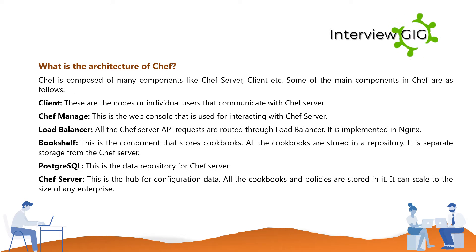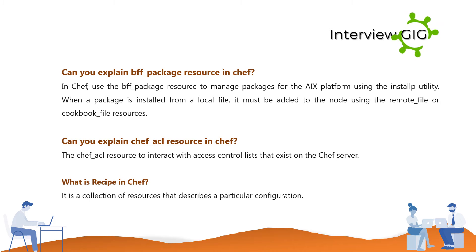What is the architecture of Chef? Chef is composed of many components. Client: These are the nodes or individual users that communicate with the Chef server. Chef Manage: This is the web console used for interacting with the Chef server. Load Balancer: All Chef server API requests are routed through a load balancer implemented in Nginx. Bookshelf: Stores all cookbooks in a separate repository from the Chef server. PostgreSQL: The data repository for Chef server. Chef Server: The hub for all configuration data, storing all cookbooks and policies, and can scale to the size of any enterprise.